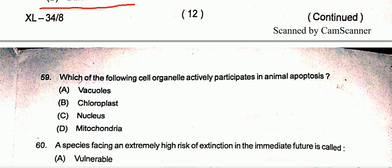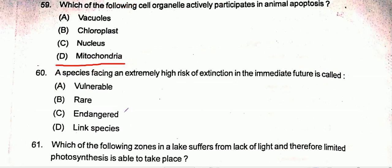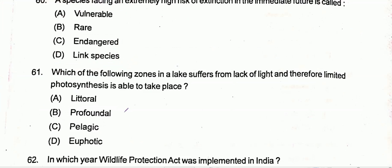Question number 59: Which of the following cell organelles actively participates in animal apoptosis? Option D is the correct one, that is mitochondria.